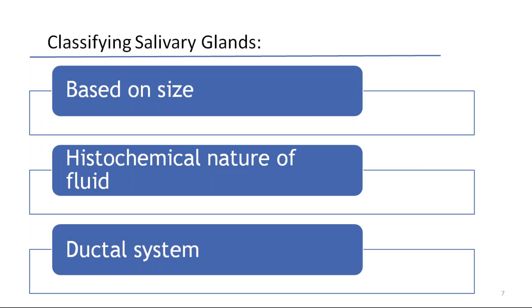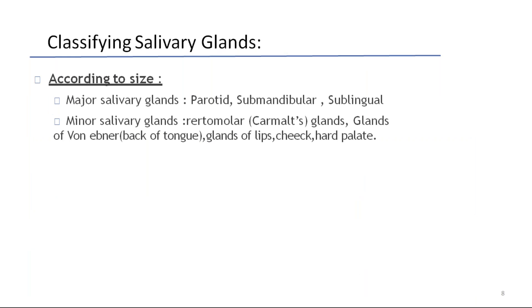How do we classify salivary glands? Based on size, histochemical nature of the fluid, and ductal system. Based on size, there will be major and minor salivary glands. Major salivary glands — as you all know — are the parotid, submandibular, and sublingual glands.